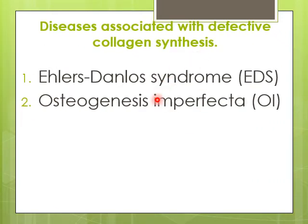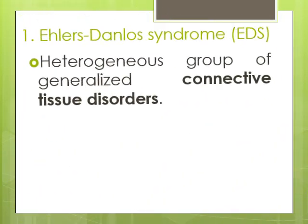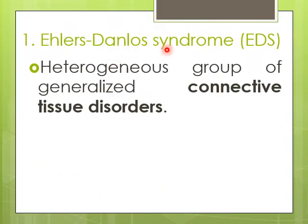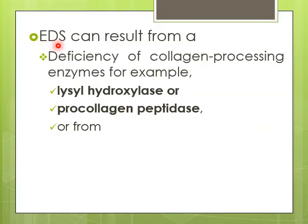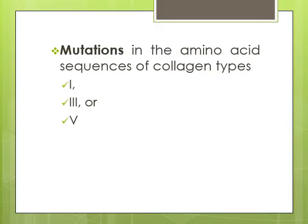Two important collagenopathies will be studied: Ehlers-Danlos syndrome (EDS) and osteogenesis imperfecta (OI). EDS belongs to generalized connective tissue disorders and arises from genetic defects in the metabolism of fibrillar collagen molecules. It can be caused by defective synthesis of lysyl hydroxylase or pro-collagen peptidases, or by mutations in type 1, type 3, or type 5 collagen.